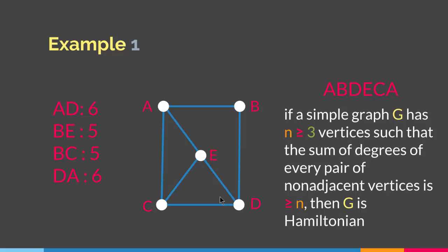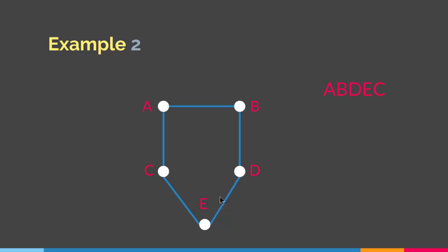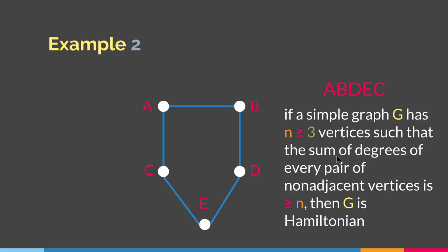However — and I repeat this — if the condition is not present in the graph it does not mean the graph is not Hamiltonian. Let me give an example. As you can see, in this particular example we have five vertices and this graph has a Hamiltonian path. We can start from A, go to B, go to D, go to E, then go to C, and then go back to A. So as you can see, this particular graph is Hamiltonian. However, the condition of Ore's Theorem does not apply to it, because the sum of degrees of every pair of non-adjacent vertices is less than 5. Yet the graph is still Hamiltonian.